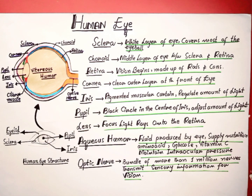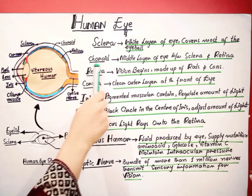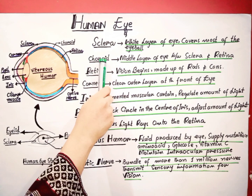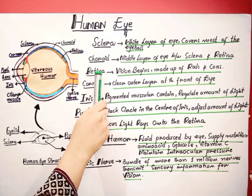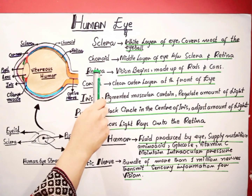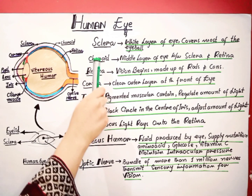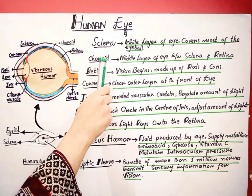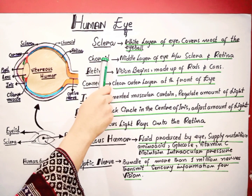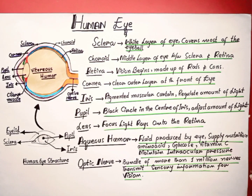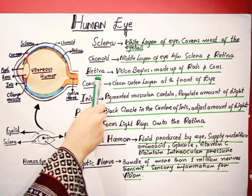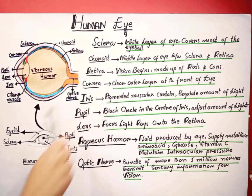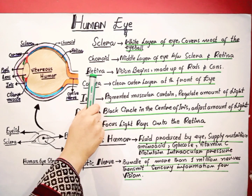This thin choroid keeps the retina healthy and functioning. The function of the choroid is to maintain the retina's health by providing oxygen and nutrients to the retina and to the eye as a whole.